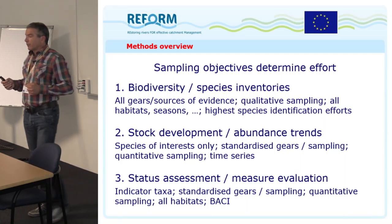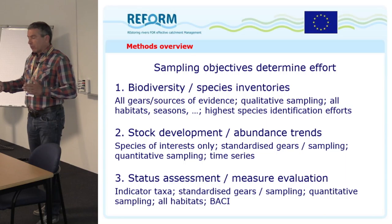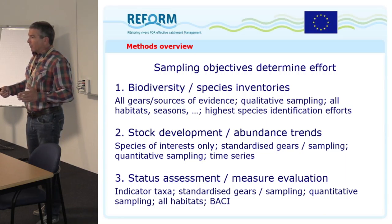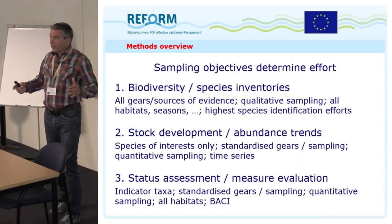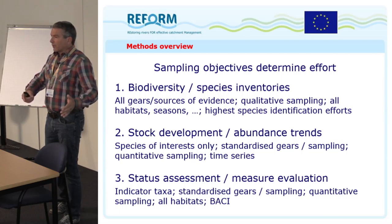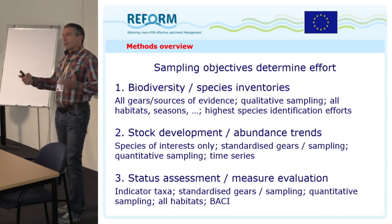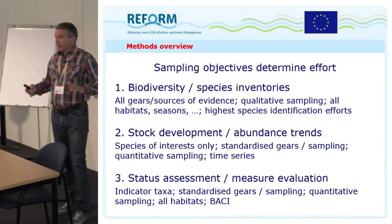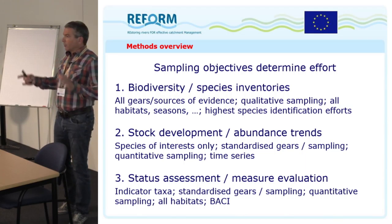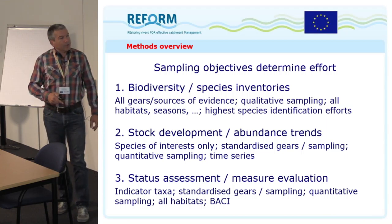Why is it important? You see from the change in the control site over time how much change in the community is natural variability — change that occurred even where no measure was taken — and what is probably due to your measure. From the difference between these stretches you can estimate the effect of the measure. This sampling design requires keeping all other potential influences similar: sample the control stretch and the measure stretch at the same day and same time if possible. Rivers are dynamic systems — if you do one side one day and the other the next, there might be a thunderstorm overnight that hampers comparability. Things you compare in nature should be sampled as closely together as possible.